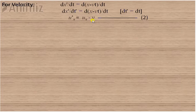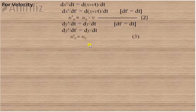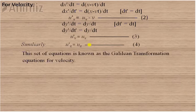Similarly, differentiating the second equation y' equals y gives u_y' equals u_y. Along the z-axis, u_z' equals u_z. These are the Galilean transformation equations for velocity.